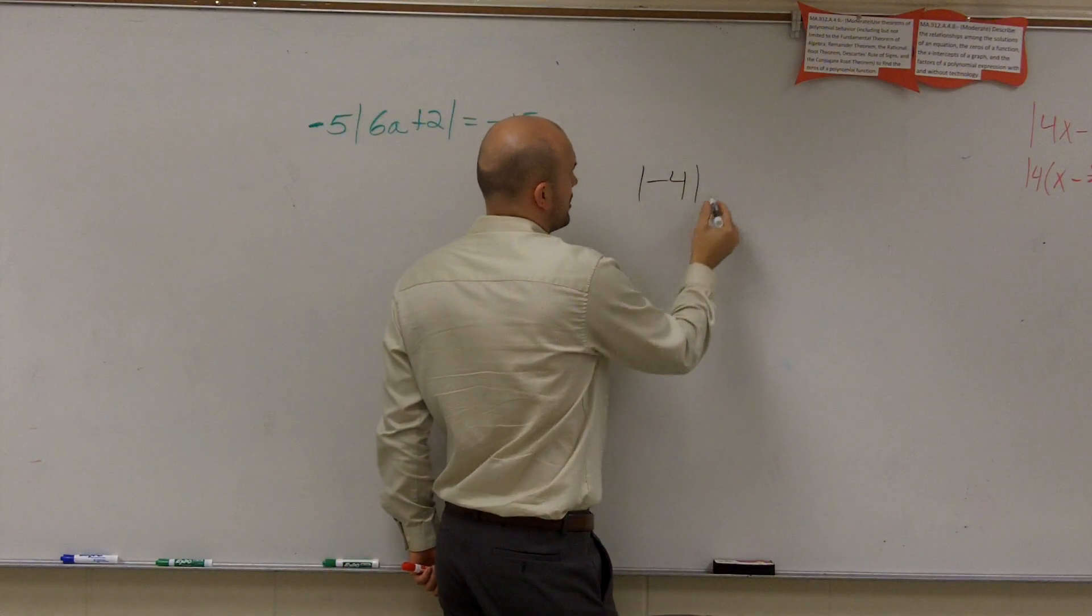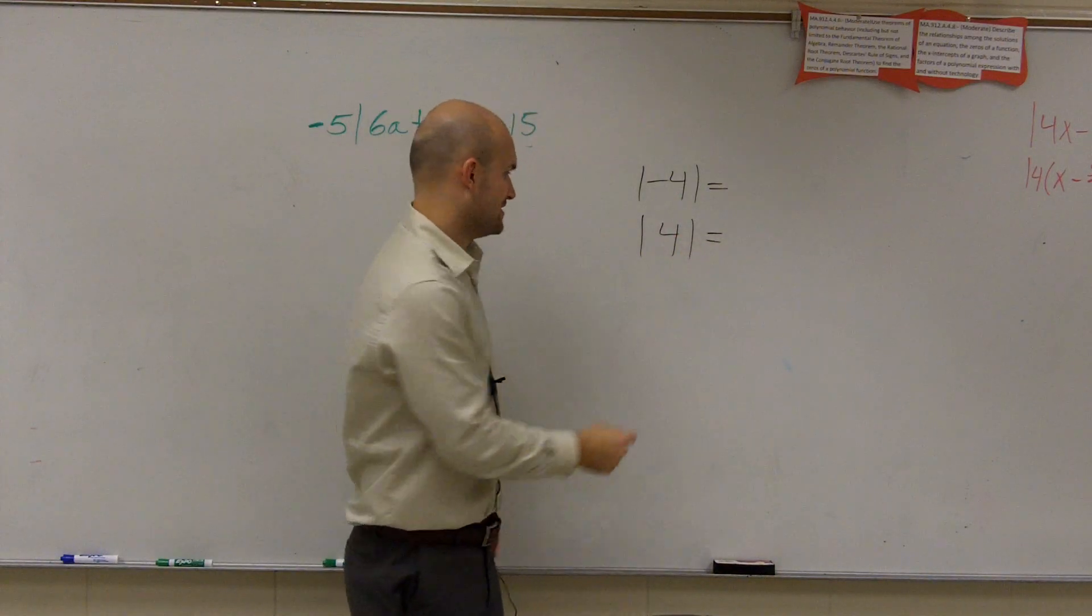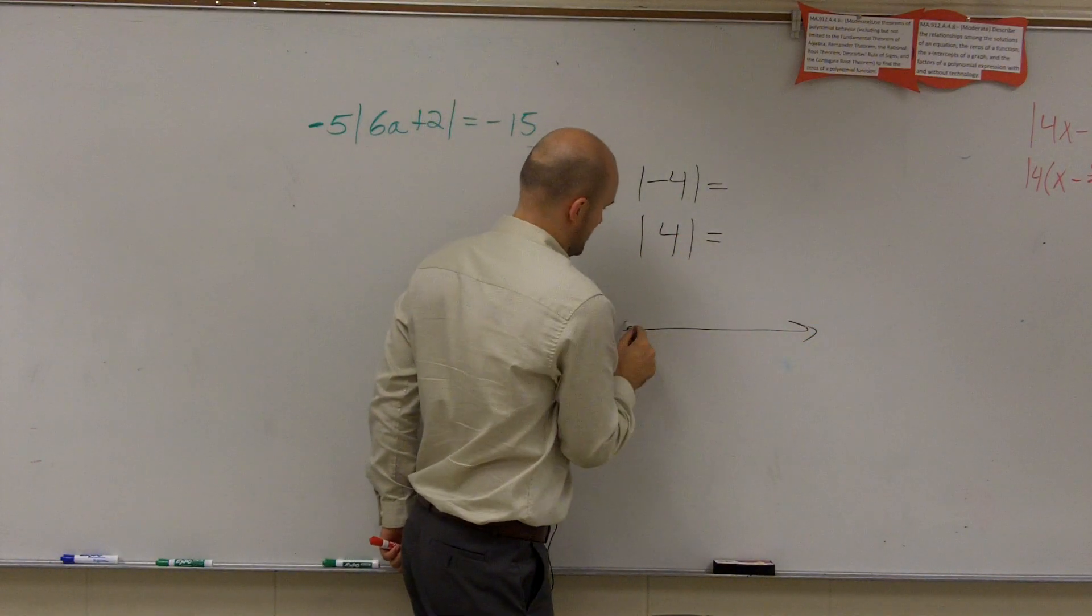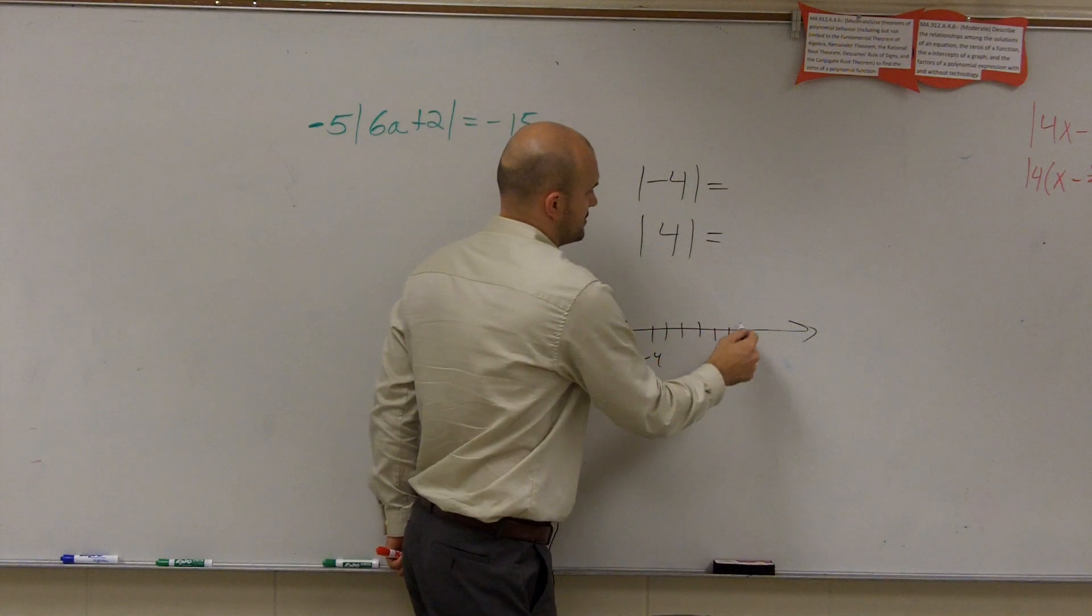Remember, absolute value inequalities say the absolute distance from 0. So if I say the absolute distance, that's talking about like on a number line. So if I have 0, 1, 2, 3, 4, -1, -2, -3, -4.